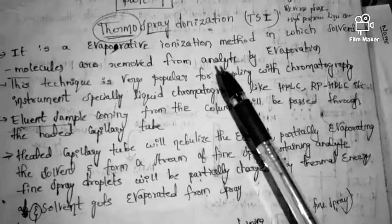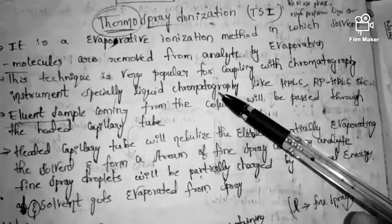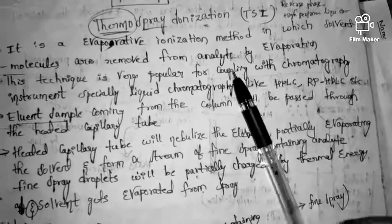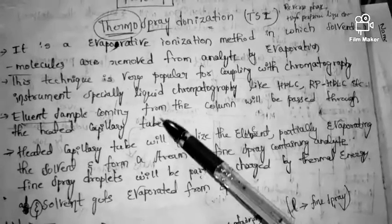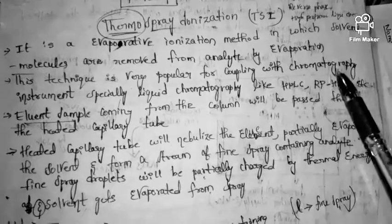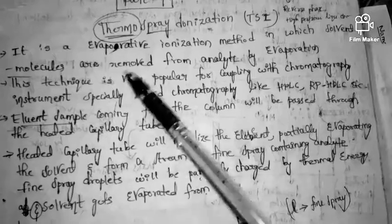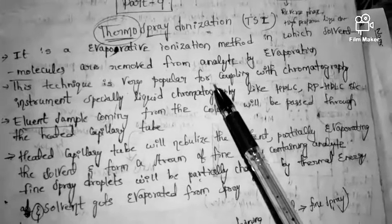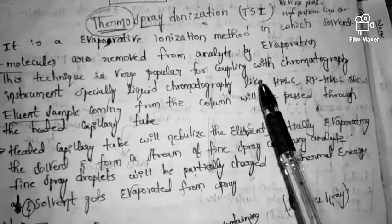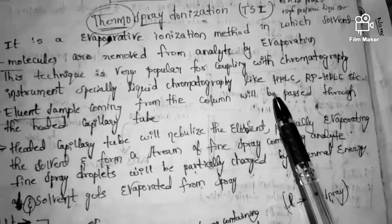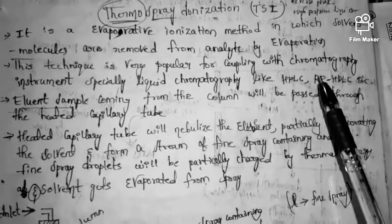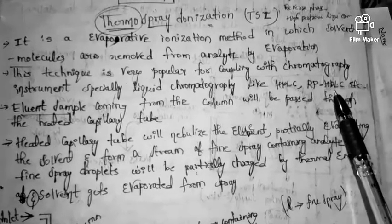In this technique, the analyte is usually surrounded by solvent molecules, which are removed by evaporation. Thermospray ionization is very popular for coupling with chromatography instruments, especially liquid chromatography like HPLC (high performance liquid chromatography) and RPHPLC (reverse phase high performance liquid chromatography).